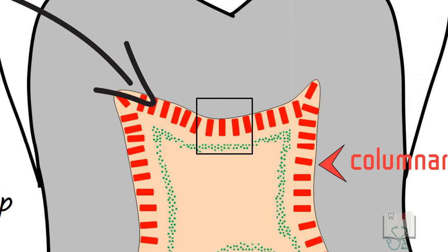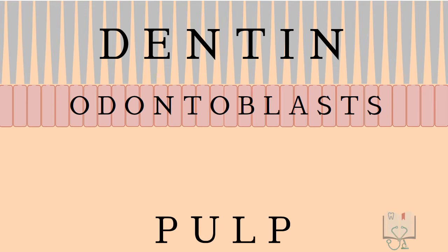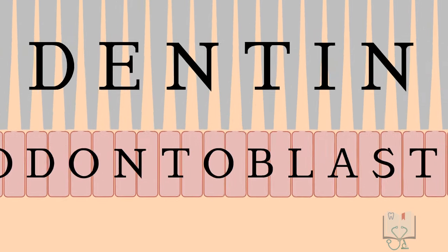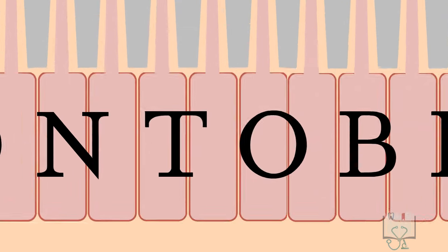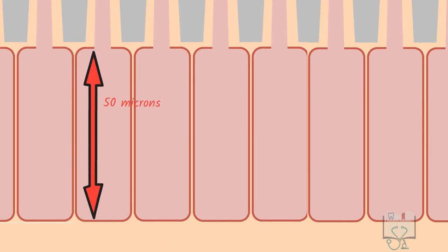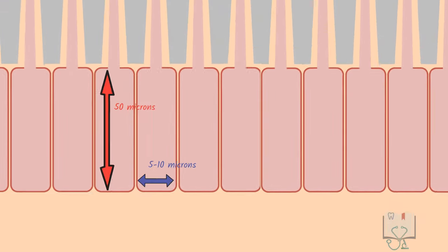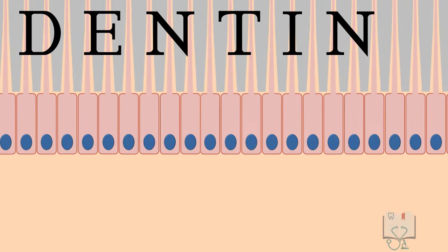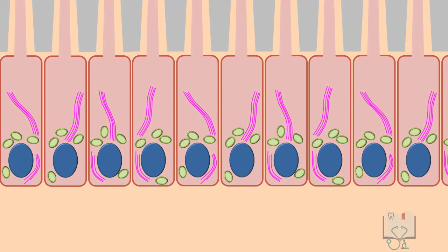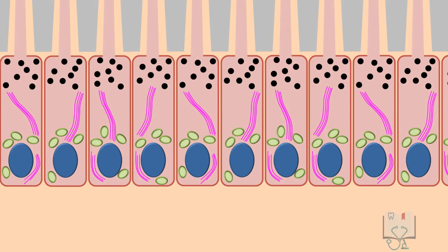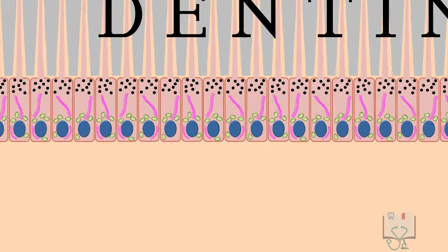Each odontoblast has a cytoplasmic process extending into the dentinal tubule called the odontoblastic process. The cell body is approximately 50 microns long and 5 to 10 microns in width. Inside the cell, the nucleus is spherical and located at the base. Adjacent to the nucleus are most of the cell organelles, including Golgi bodies and rough endoplasmic reticulum. The apical part is devoid of organelles, though during dentinogenesis it is filled with secretory granules.